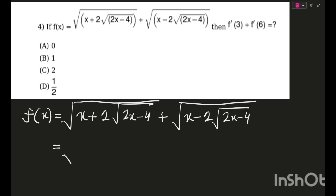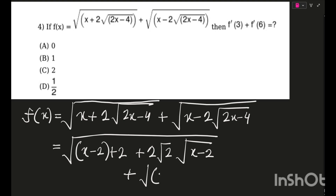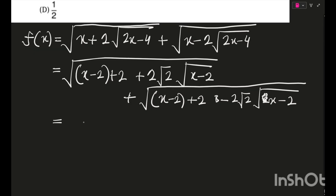We'll build something from this. I'll write x as (x−2) + 2, then take √2 common from inside the root, giving 2√2 · √(x−2). Now, the first term becomes (√(x−2) + √2)² and similarly the second term becomes (√(x−2) − √2)².